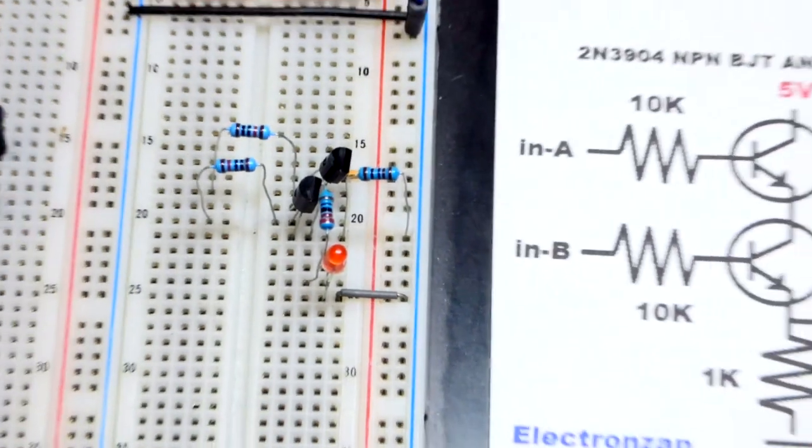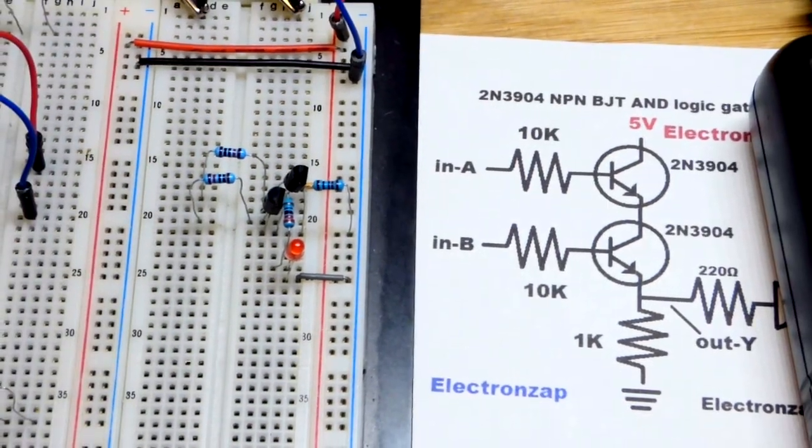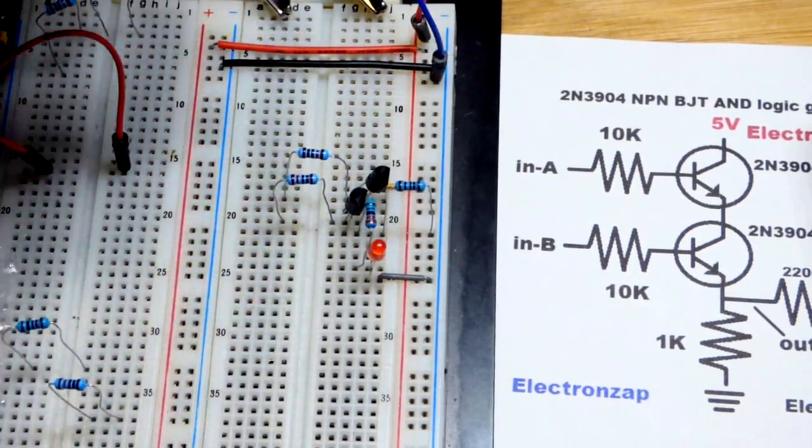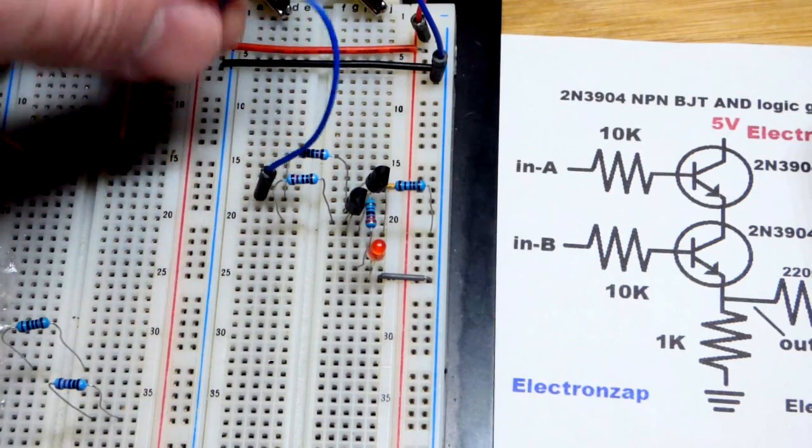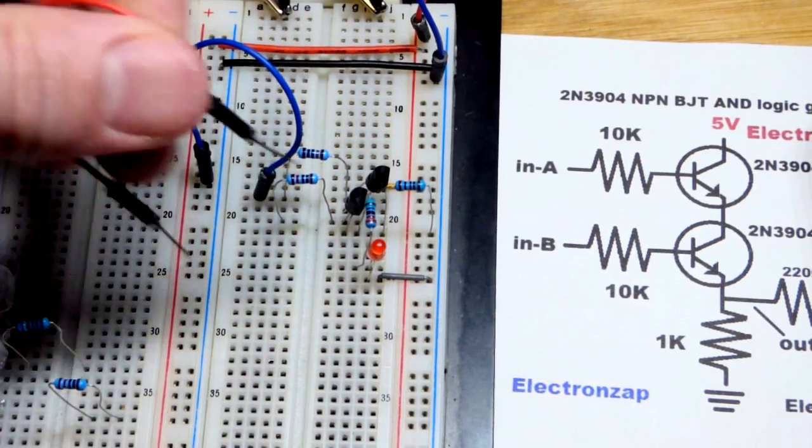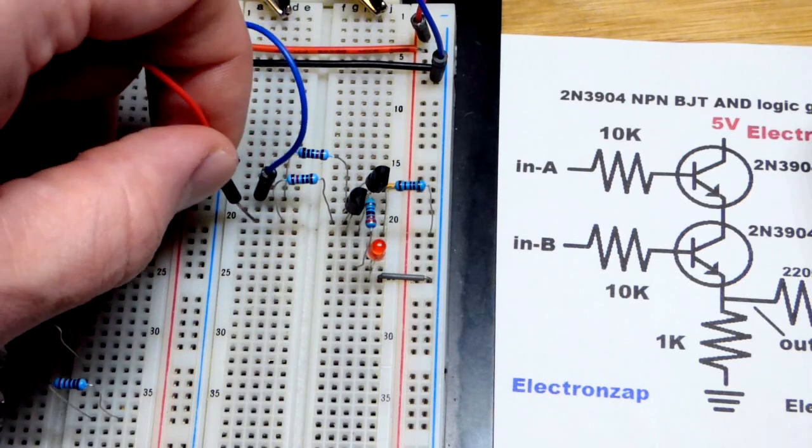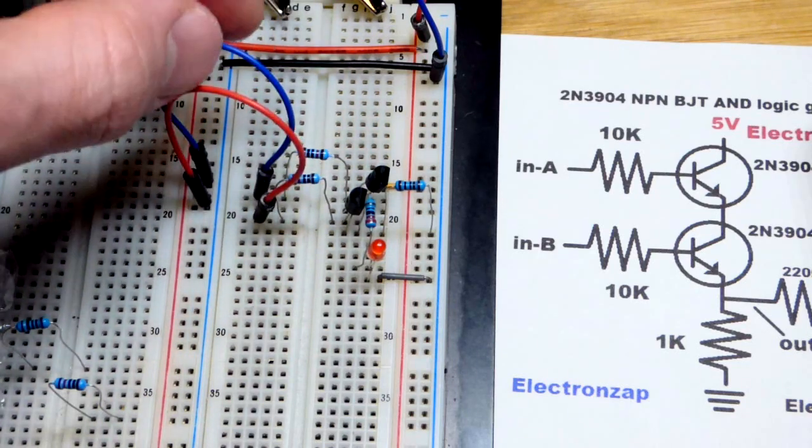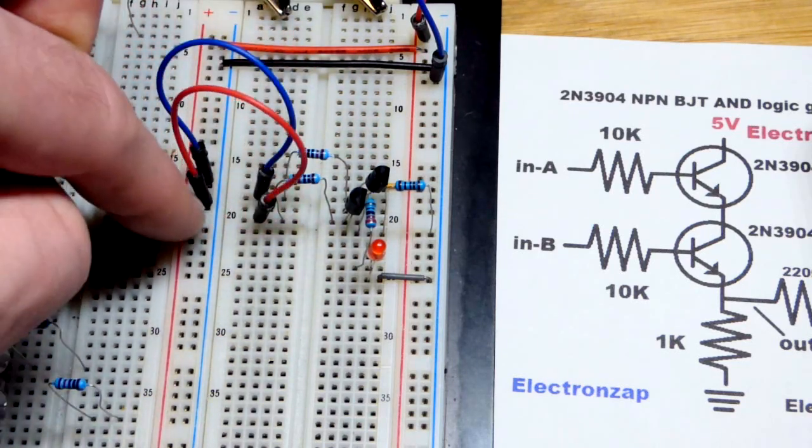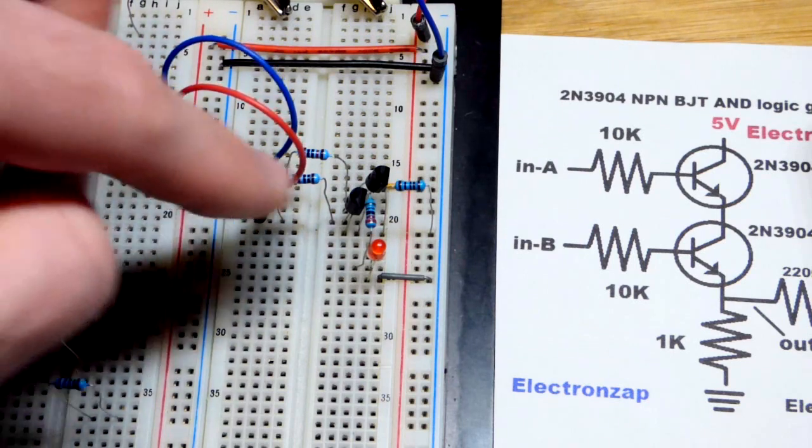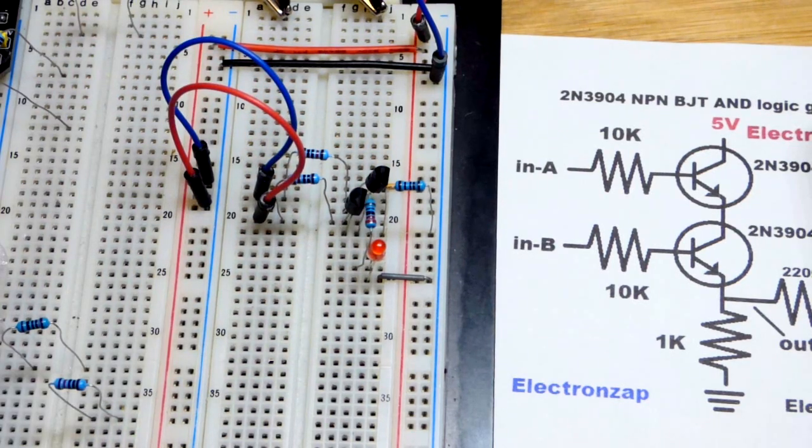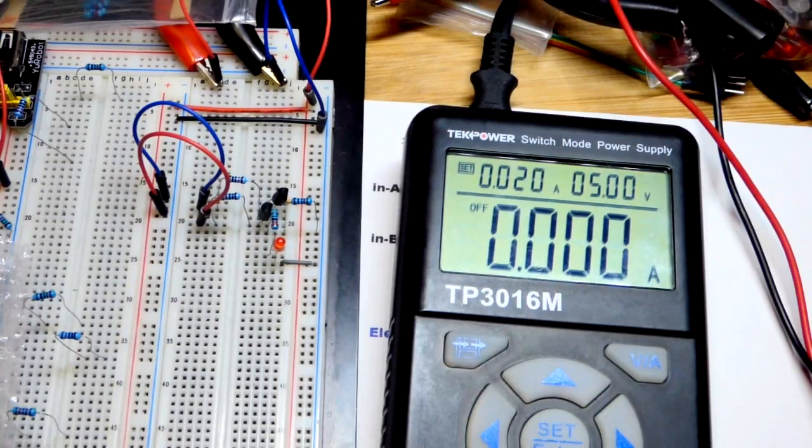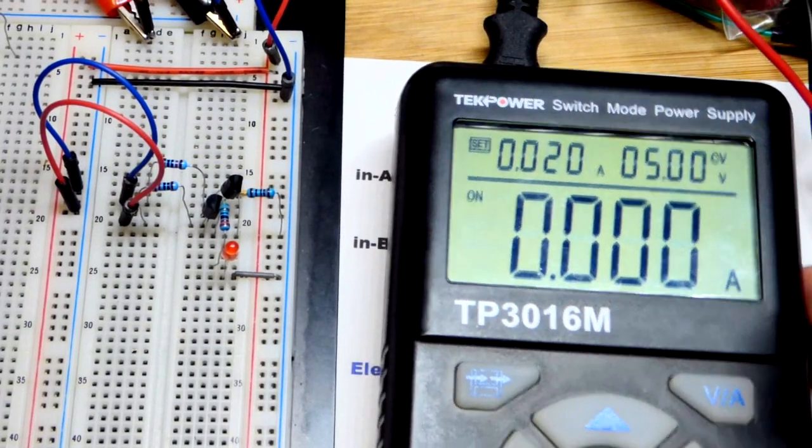So for our actual inputs, we can use mechanical switches or whatever. I'm just going to use these jumpers right here. And so I'll plug one to that one and put it to the negative rail. And then one to the other one. And put it to the negative rail. So these are off. They're turning the transistors off. They're zero volts, zero volts. We need five volts and five volts for the output to be on for the LED to turn on.